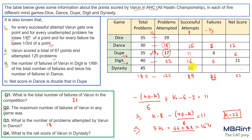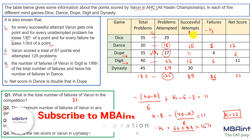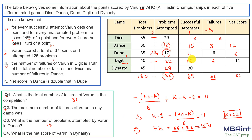Now summing the attempts column: 18 + 22 = 40, plus 29 = 69, plus 17 = 96, so dynasty attempts = 125 − 96 = 29. Summing successful attempts: 15 + 11 + 16 = 42, plus 30 = 72, so dynasty successful = 89 − 72 = 17. Dynasty failures = 29 − 17 = 12. Net score for dynasty: 17 − (12 × 1/3) − 0 × (1/6) = 17 − 4 = 13. Wait — that gives 13.